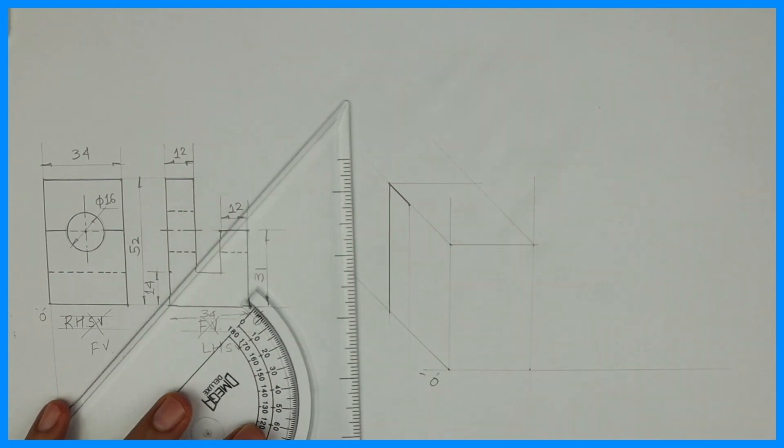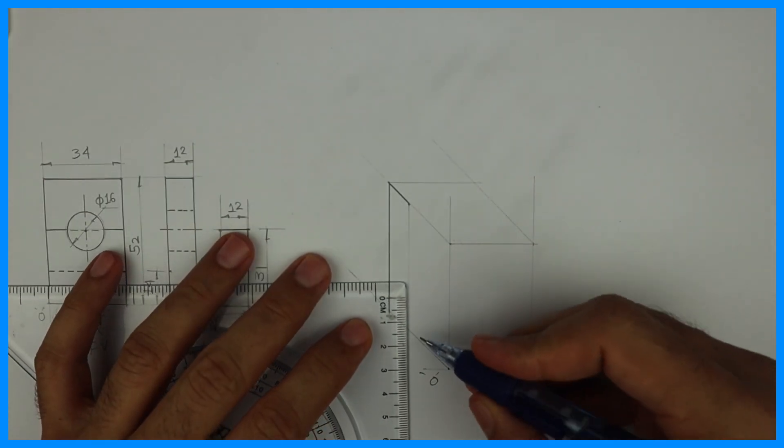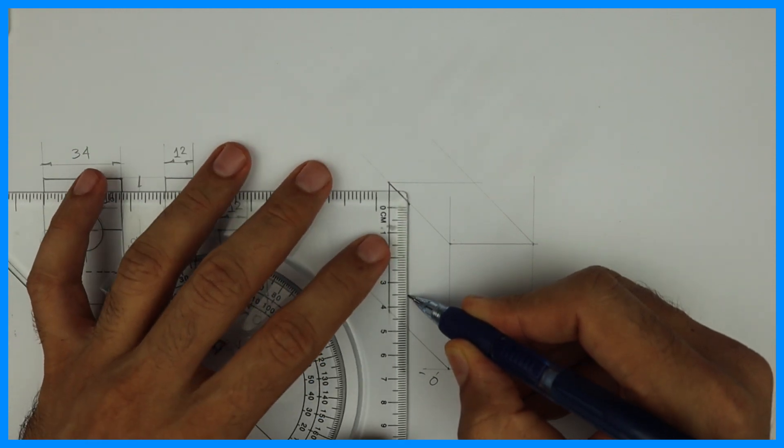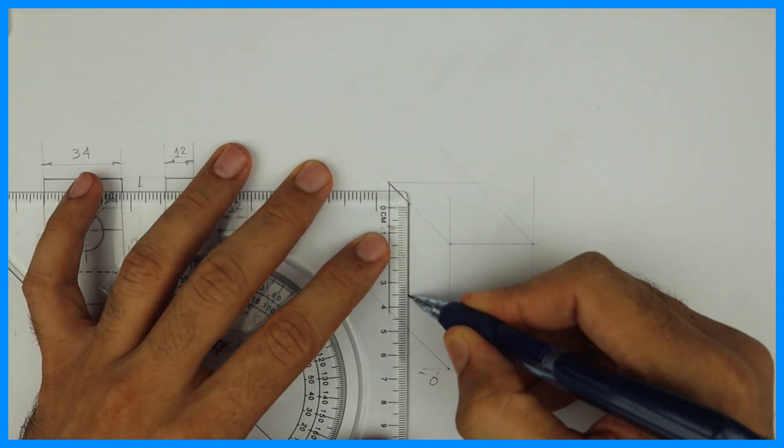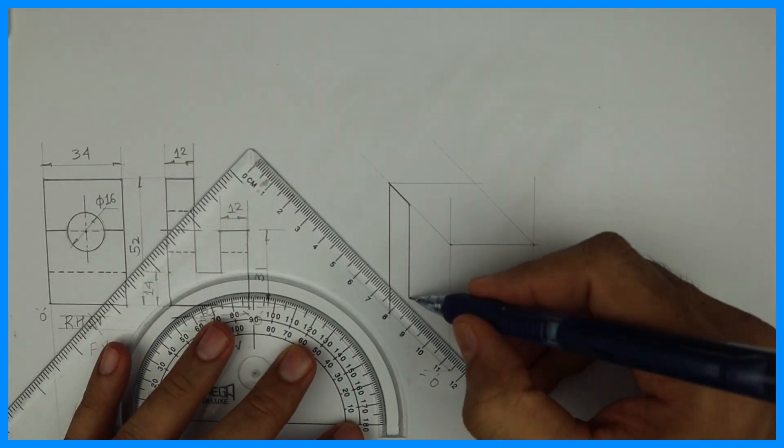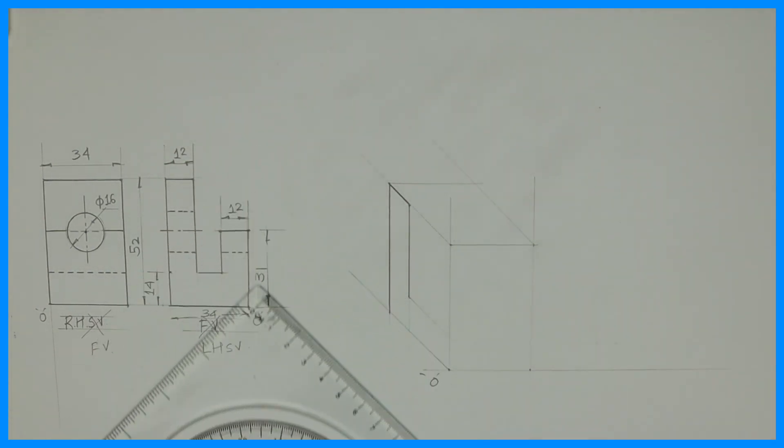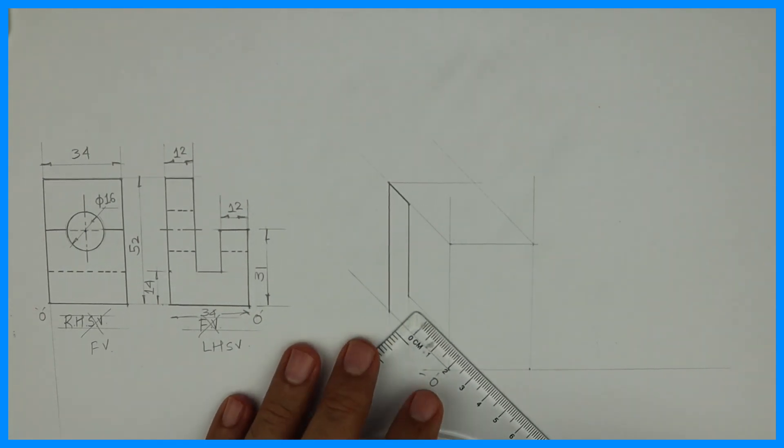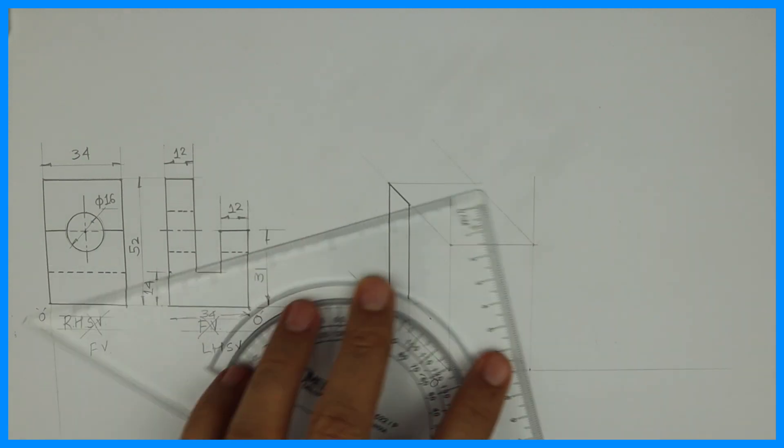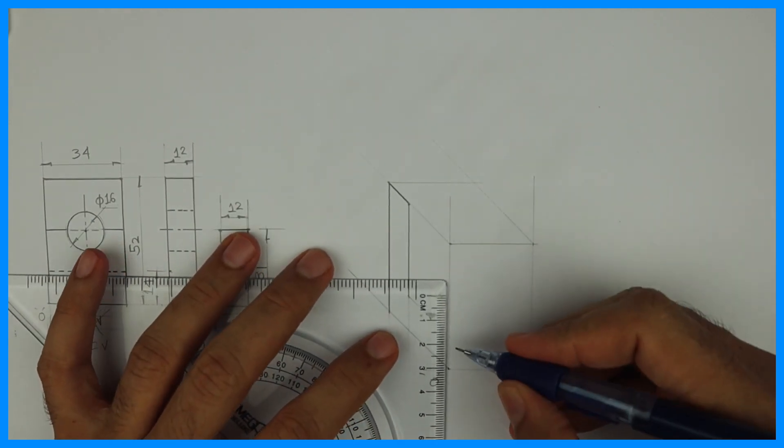This will be dark. From here also we'll take 12. And this much line will be dark. This is also 12. Height is 31.